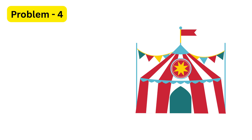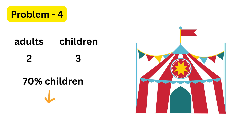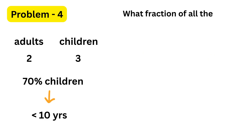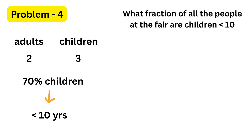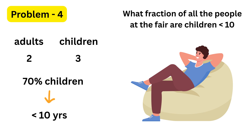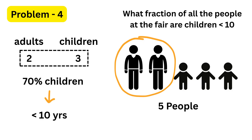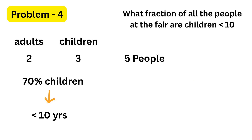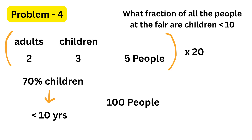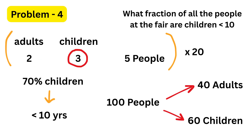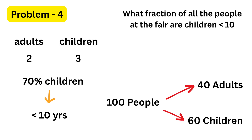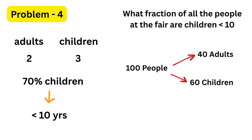Now let's look at the next problem. We are told that at a fun fair, the ratio of adults to children is two to three. We are also told that seventy percent of the children are below ten years old. We need to find what fraction of all the people at the fair are children below ten. The ratio two to three means that out of every five people, two are adults and three are children. The trick here is to multiply all sides by twenty to get one hundred total, forty adults, and sixty children.